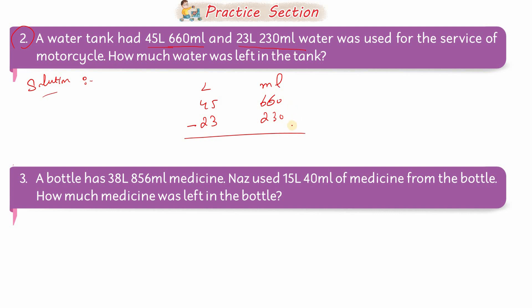بقایا پانی find کرنے کے لیے subtraction کرنی ہوگی: 0 میں سے 0 کم کیا، 6 میں سے 3 کم کیا 3، 6 میں سے 2 کم کیا 4 — یہ answer ml میں آیا۔ 5 میں سے 3 کم کیا 2، 4 میں سے 2 کم کیا 2 — یہ liters میں آیا۔ پتا چلا کہ tank میں بقایا پانی 22 liters اور 430 milliliters ہے۔